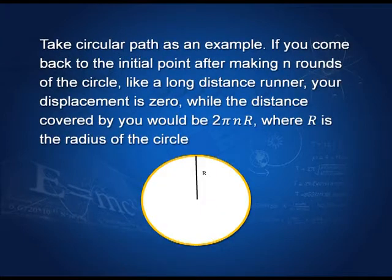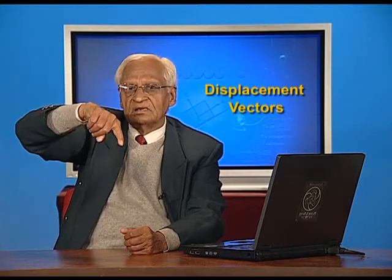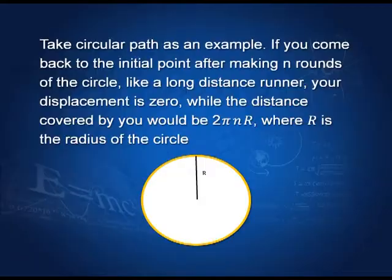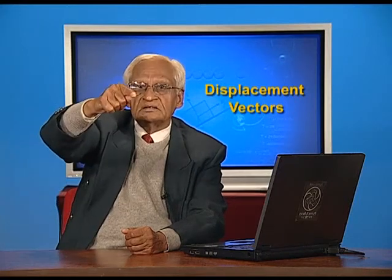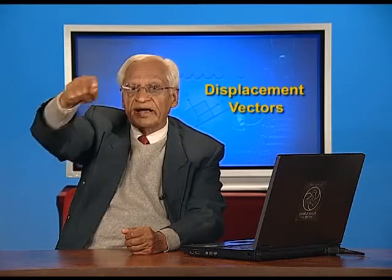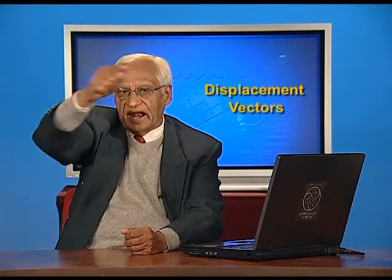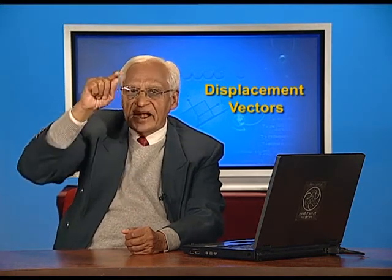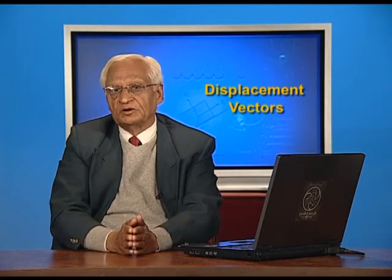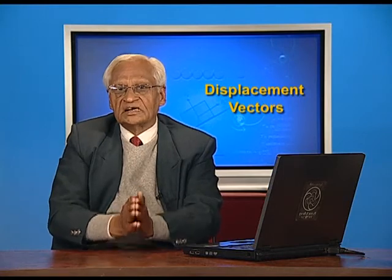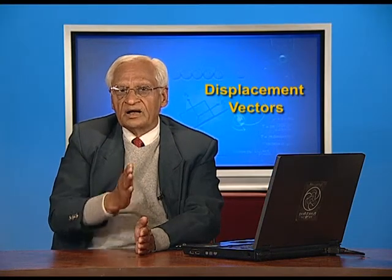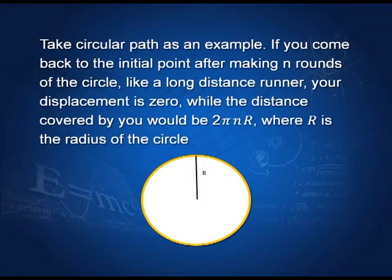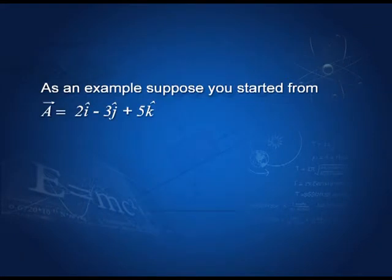In fact, if you go around a circle many times as a runner does in a race, you come back after one circular path to the same point. So your displacement vector is zero. But in one circle you have covered a distance equal to 2πr. If you went n times around this circle and came back to the same point, your displacement will be zero, but the distance covered would be 2πr times n, the number of rotations.